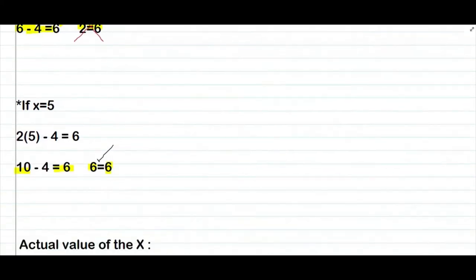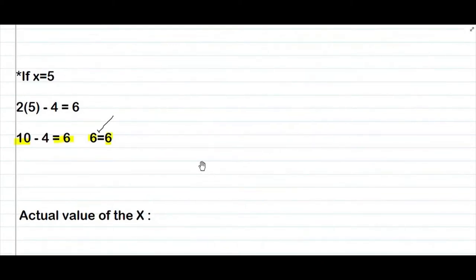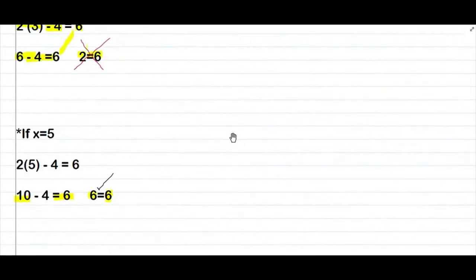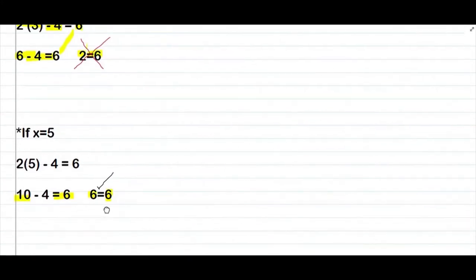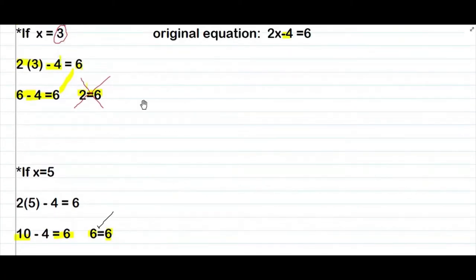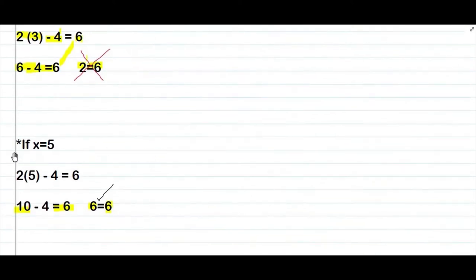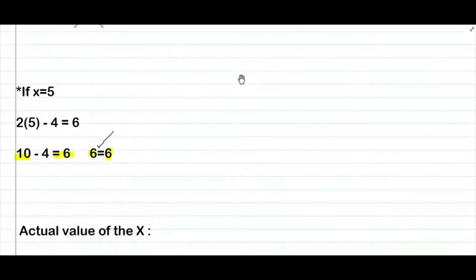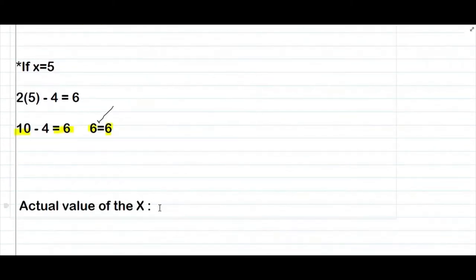Ang next na gagawin natin is titignan natin yung actual value ng x. Pag pinatunayan sa inyo kung ano yung actual value ng x, ang kailangan ninyo lang gawin: hanapin yung value ng x na nakapagbigay sa inyo ng true na resulta. Nung ang value ng x natin is 3, mali. Nung x naman is equals to 5, tama. Ang ating value ng x ay 5.